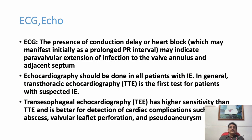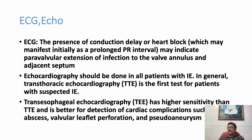ECG may show a prolonged PR interval or first-degree heart block, as infection can affect the cardiac conduction system. Transthoracic echocardiography picks up most lesions, but if transthoracic echo is negative and IE is strongly suspected, or in cases of PUO, transesophageal echocardiography (TEE) is the best option.